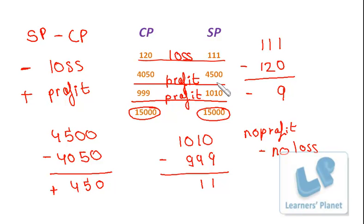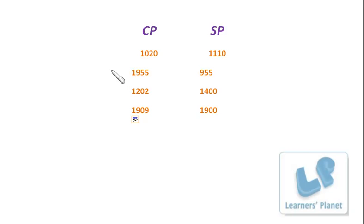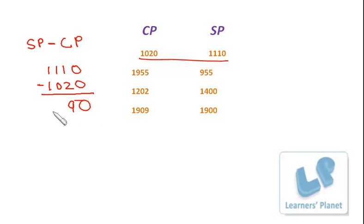So, we'll take a few more sums like this. Now, these are the next sums that we have here with us. So, first, we'll take this one. Again, we'll follow SP minus CP. For the first sum, it is 1110 minus 1020, which equals to 90 and that is a positive 90. So, this will be a profit.